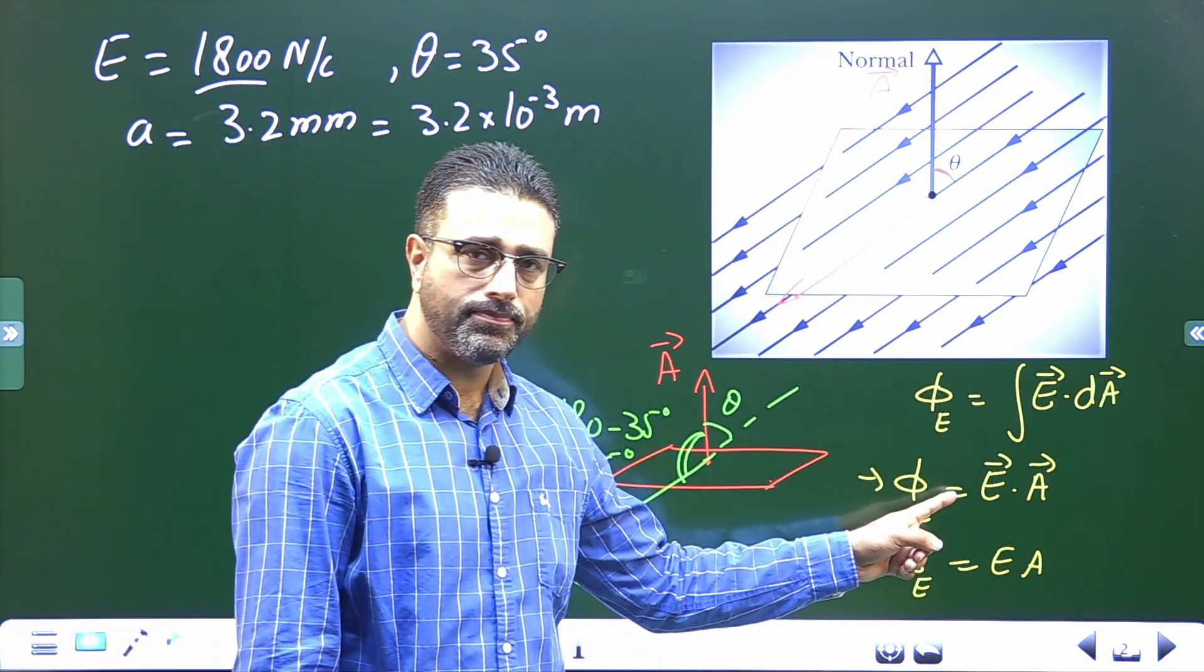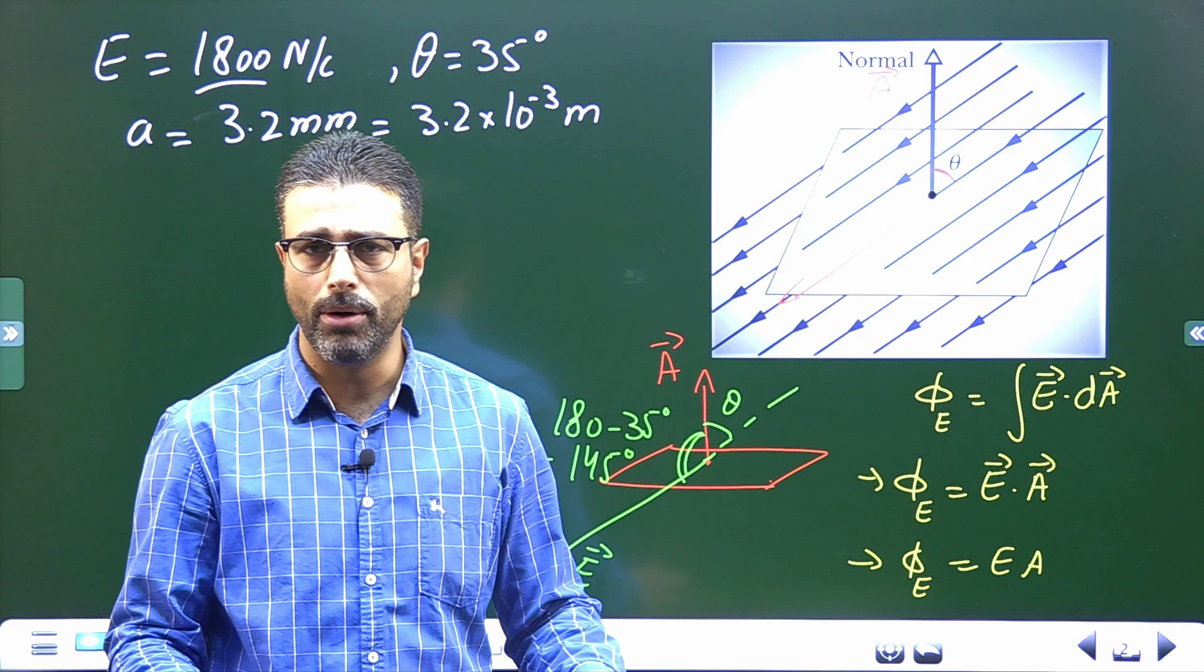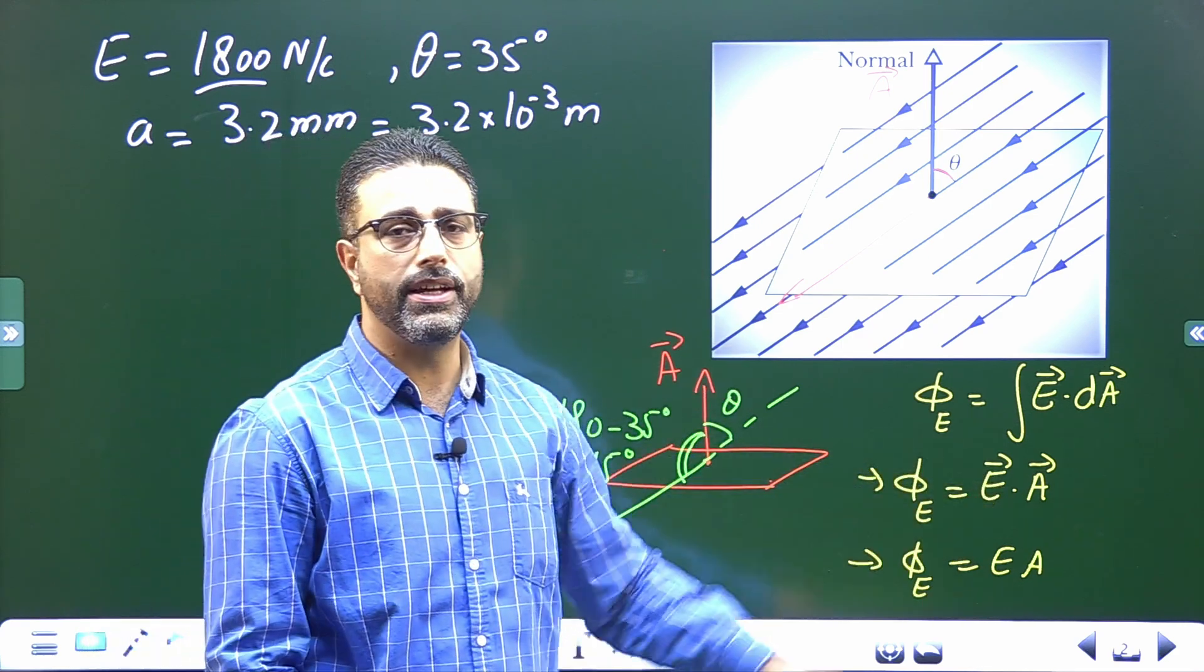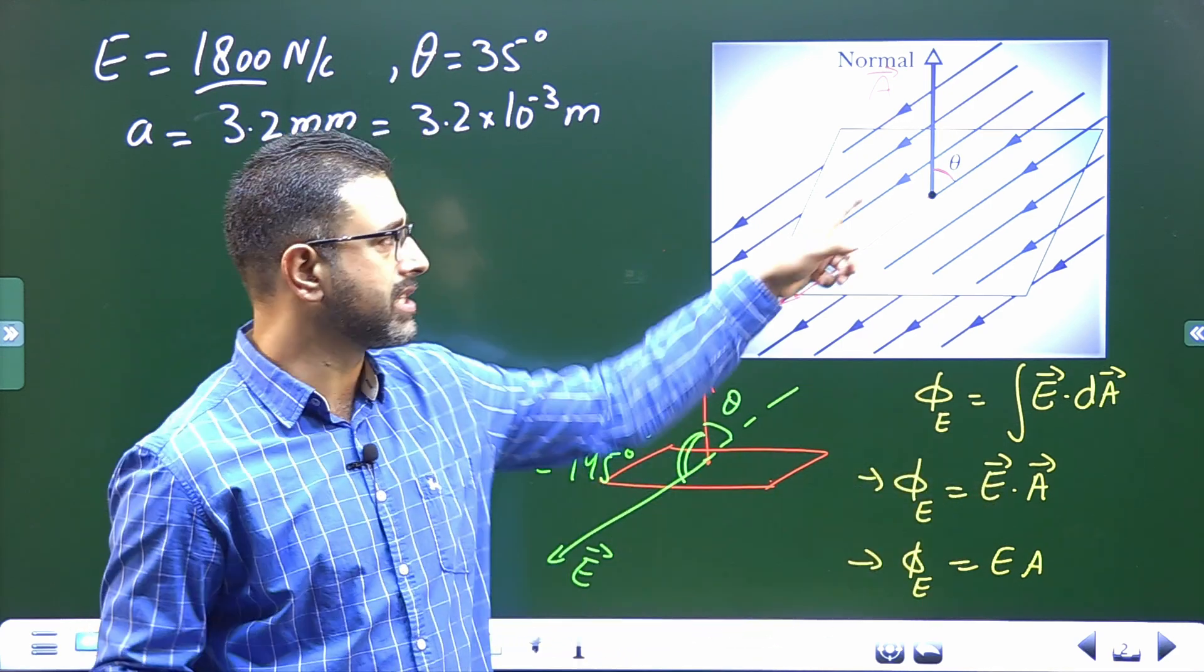Two conditions for this one: electric field must be uniform, which is the case here. Surface must be plain, which is again the case here.